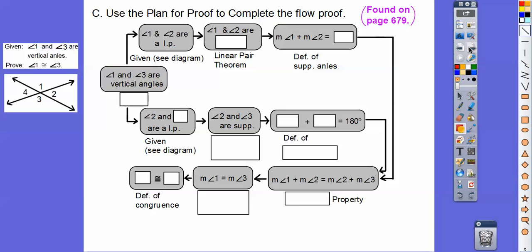Here's a plan for a proof found on page 679. Students should bring their books and open to page 679 to fill out this proof. Given that angle 1 and angle 3 are vertical angles — here's the picture — we're going to prove that they're congruent.